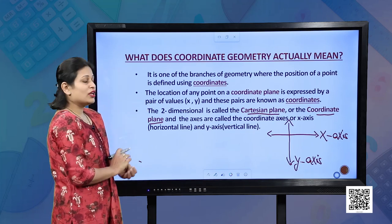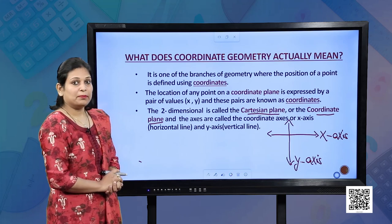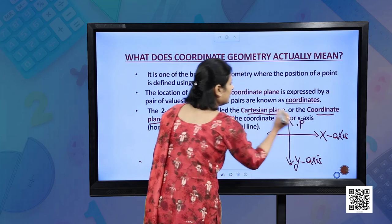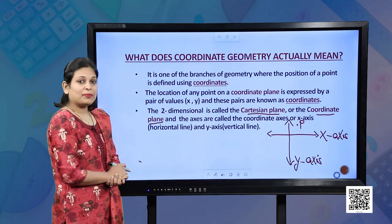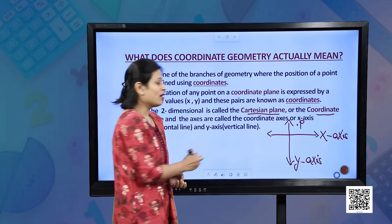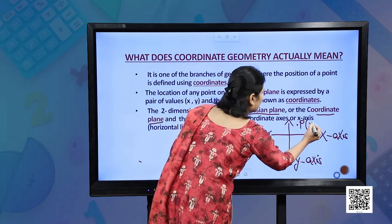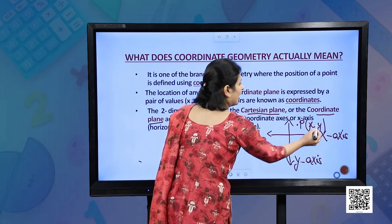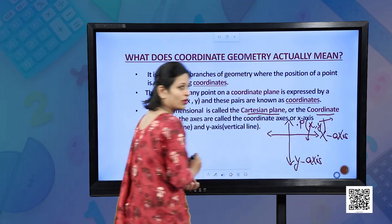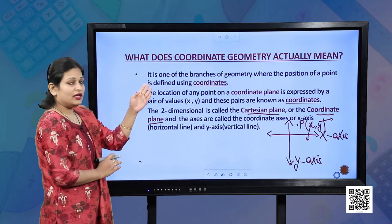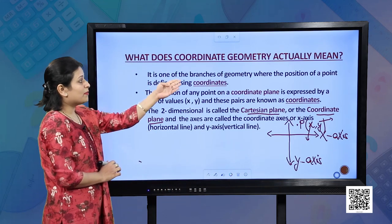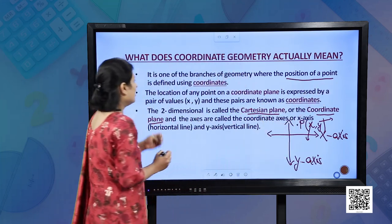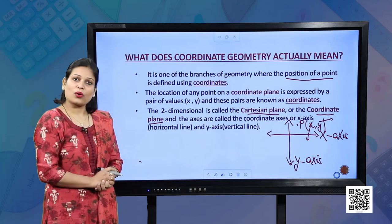The location of any point on a coordinate plane — if I consider a point P — is expressed by a pair of values (x, y), where x is the x-coordinate and y is the y-coordinate. So coordinate geometry is one of the branches of geometry where the position of a point is defined using coordinates.